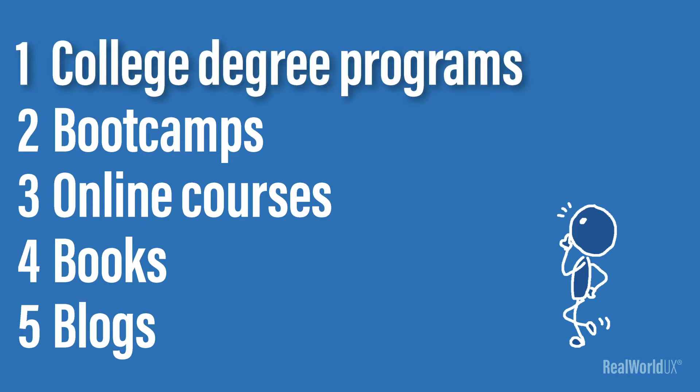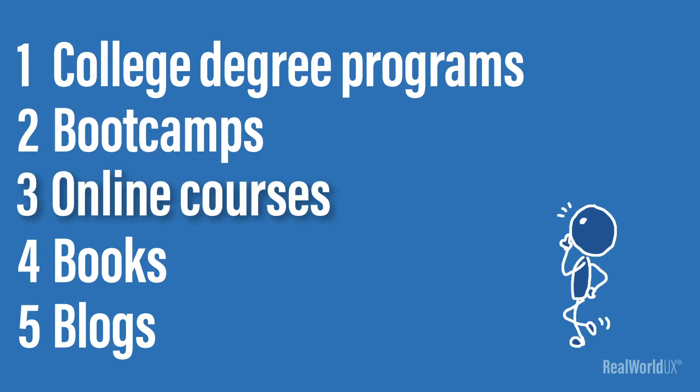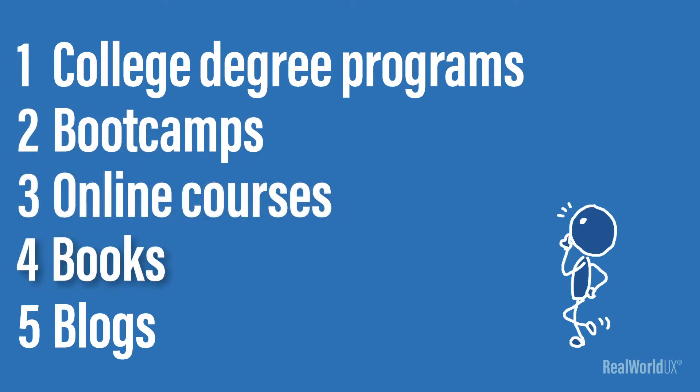The UX Resource Map breaks down UX resources into these five categories: number one, college degree programs; number two, boot camps; number three, online courses; number four, books; number five, blogs.